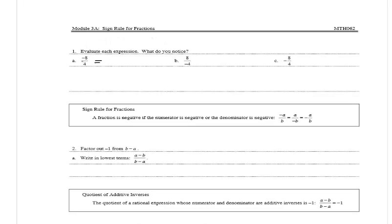If we have negative 8 divided by 4, that equals negative 2. In B, 8 divided by negative 4 gives me negative 2. And in C, we have a negative out in front of 8 divided by 4, which is also equal to negative 2.